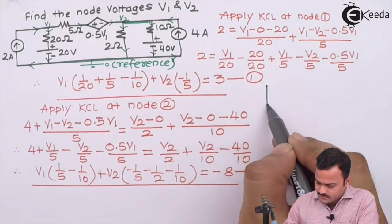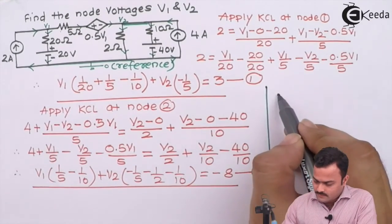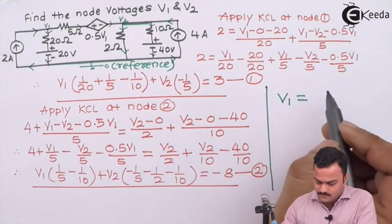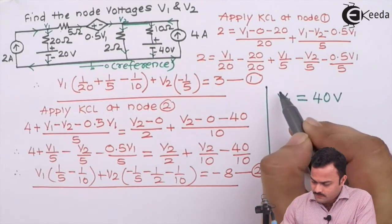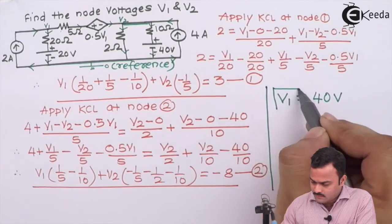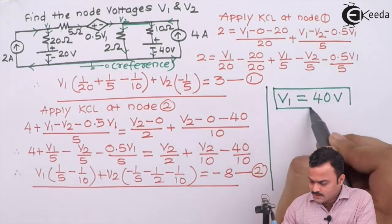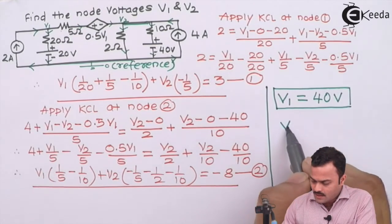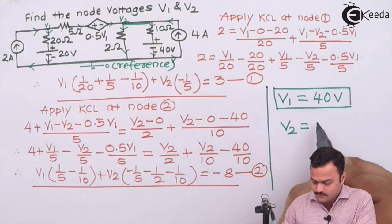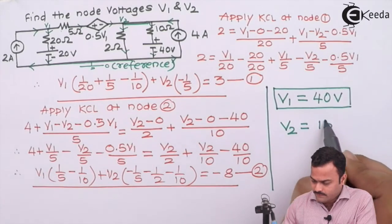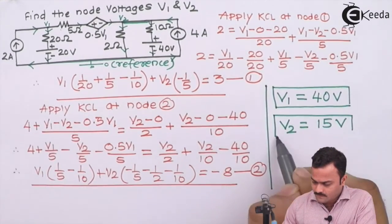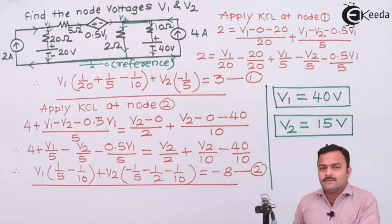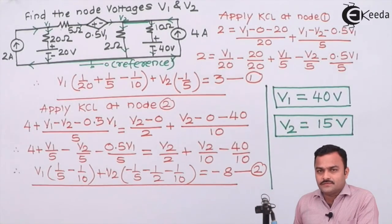After solving these two equations we will get V1 as 40 volts, node 1 voltage as 40, and node 2 voltage will be 15 volts. This is the answer. Thank you.